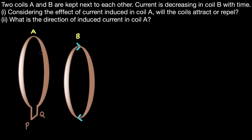There are two coils A and B which are kept next to each other, and current is decreasing in coil B with time. We can see these two coils in front of us. The first part is considering the effect of current induced in coil A — will these coils attract or repel? The second part is: what is the direction of induced current in coil A?